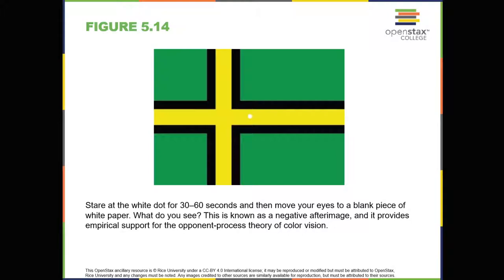You can test this concept using the flag in figure 5.14. Stare at the white dot in the middle of the flag for 30 to 60 seconds. After that time has passed, move your eyes to a blank piece of white paper. What do you see? This is known as a negative after image and it provides empirical support for the opponent process theory of color vision. These two theories — the trichromatic theory and the opponent process theory — are not mutually exclusive. Research has shown that they just apply to different levels of the nervous system. For visual processing on the retina, trichromatic theory applies.